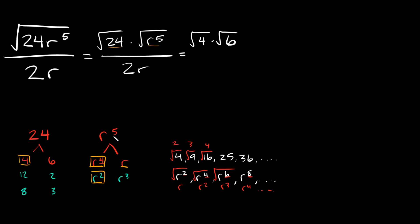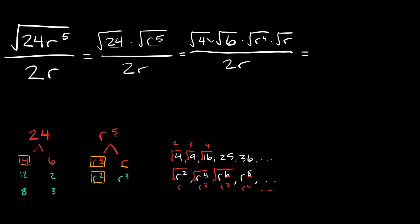Now we can simplify. The square root of 4 equals 2. So we have 2 times the square root of 6, multiplied by the square root of r to the fourth — which equals r squared — times the square root of r, which we can't simplify further. And this is all over 2r.